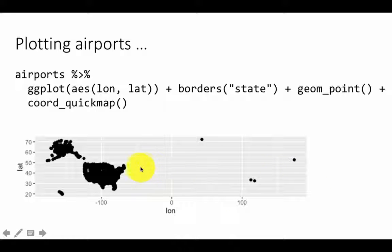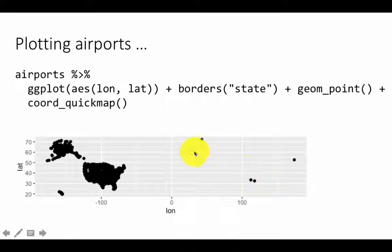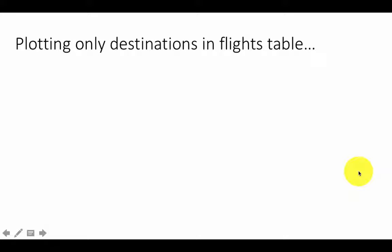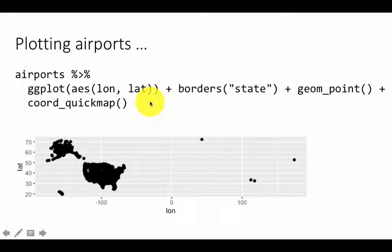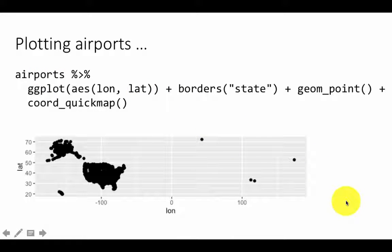Now let's say that what we really want is only the airports in the U.S. alone — these are clearly airports which are far away from the U.S., maybe China and Japan. Alternatively, we want to plot only the destinations that are included in the flights table. There are many airports in the airports table — about 4,000 — but not all of those airports actually figure as destinations.